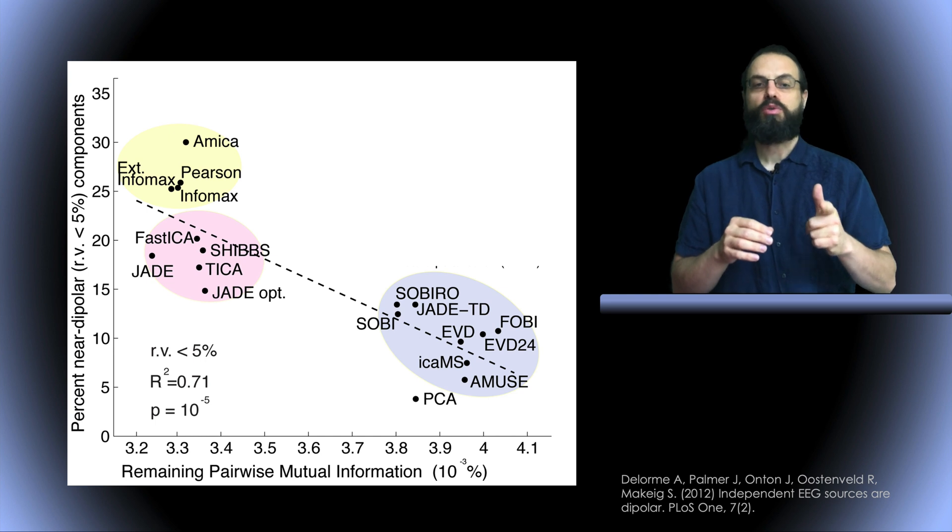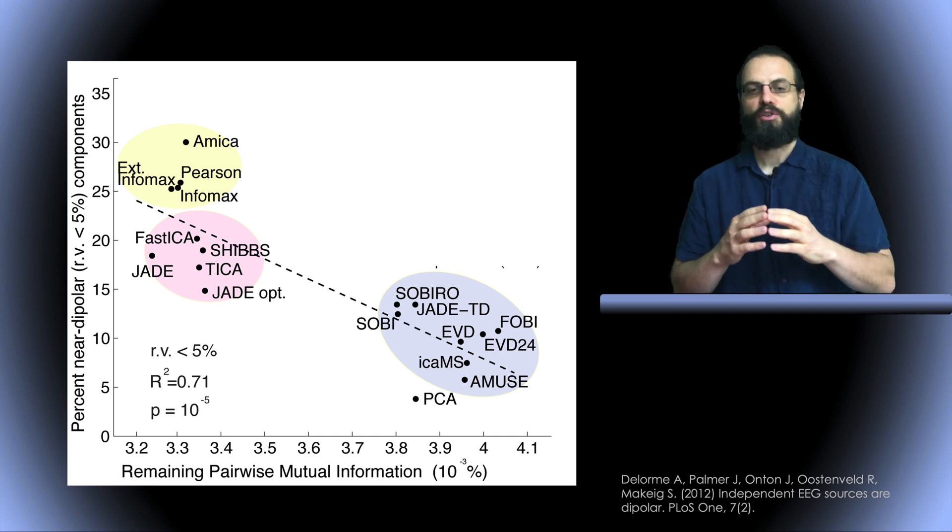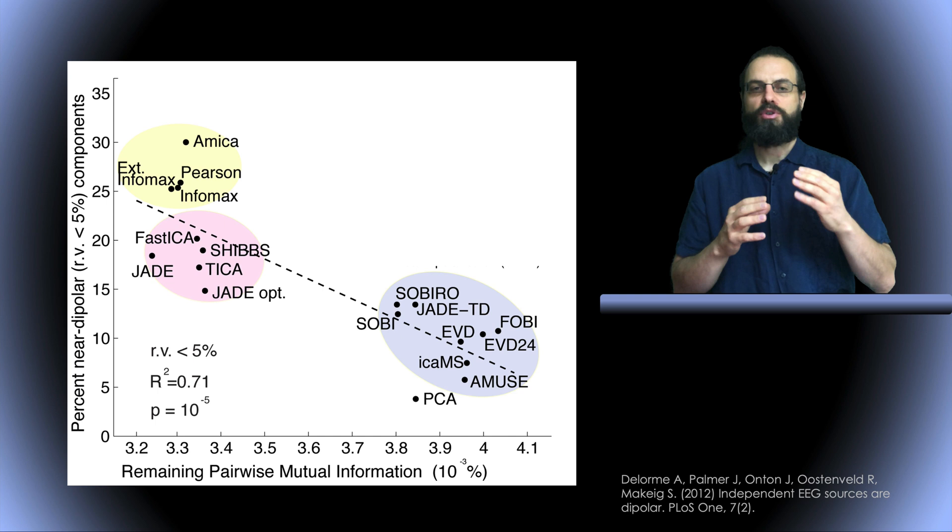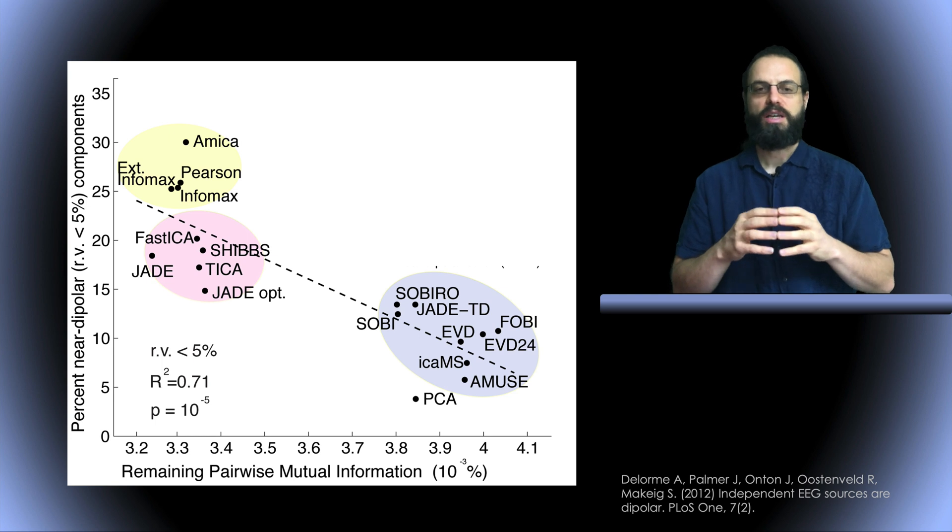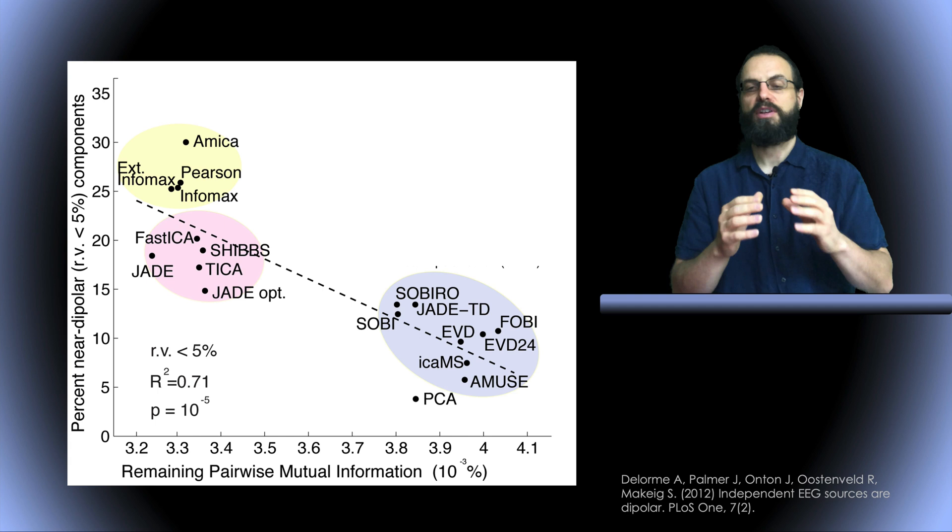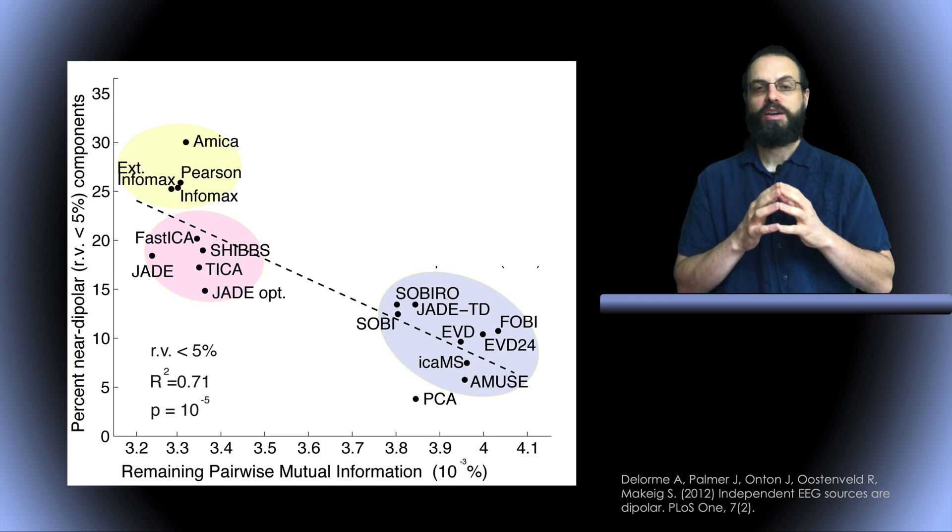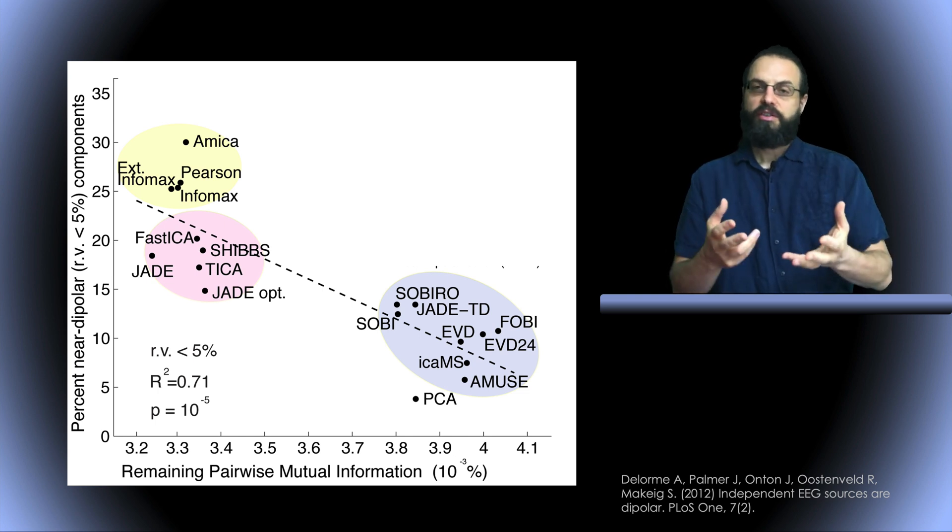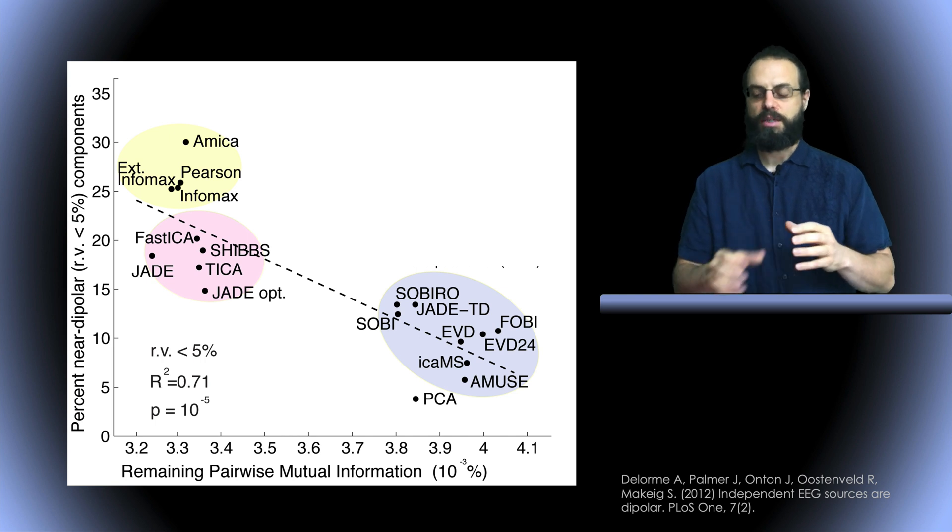This is what we get. The remaining pairwise mutual information, when we have lower values, we have more dipolar components. The AMICA algorithm and other ICA algorithms we use in EEGLAB, like InfoMax, were on the left side of the curve, which means that their components were more dipolar and they had less remaining pairwise mutual information. The colors here are added by hand. They indicate the family of algorithms. Again, this shows basically something very similar when we're using the mutual information reduction. These are two independent looks at the data, which confirm that ICA algorithms which are more efficient tend to return more dipolar components.